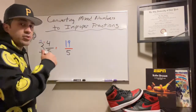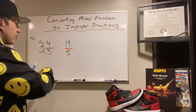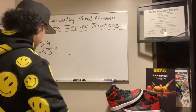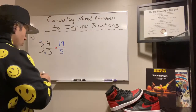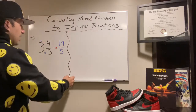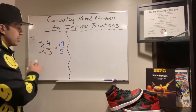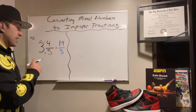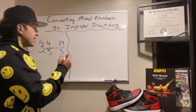As a refresher, 19 over 5 is an improper fraction because the numerator is greater than the denominator. I'm going to make a little more space here and rewrite 19 over 5. I'm going to give everyone a moment to really take in what we just did — we're not going to rush through it. We converted three and four-fifths to 19 over 5, or 19-fifths.